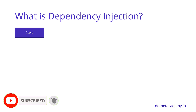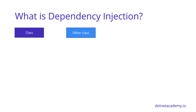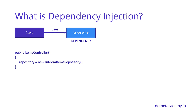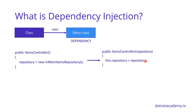So what is dependency injection? Let's think about our class. We have a class which wants to make use of some other class. When we have this kind of relationship, we say that this other class is a dependency of our class. In more concrete terms, in our case, we have the items controller, which in its constructor is creating a new instance of the repository — the InMem items repository. What we really want to do in terms of dependency injection is flip things a little bit: instead of having the items controller construct that instance, we will receive the repository in the constructor and take that reference into the class. So at this point, we are injecting the repository dependency into the items controller class.